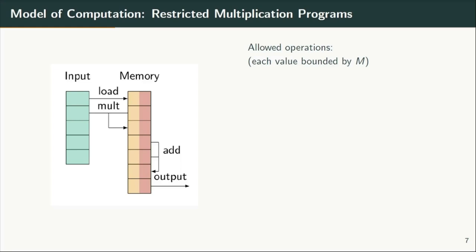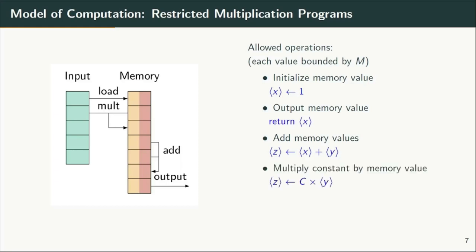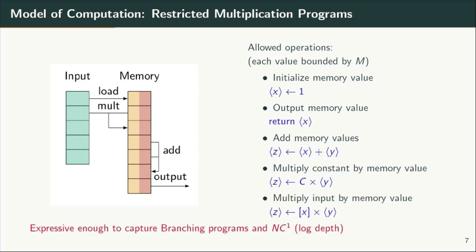RMS programs allow for initialization of a certain number of memory values, where each memory value is bounded above by a parameter m, and they allow for the following operations: we can initialize any memory value to a constant 1; we can output any memory value as part of the program output; we can add any two memory values into another memory value; we can multiply any memory value by a public constant; and finally we can do a restricted multiplication, which means multiplying any input x with a memory value y to store that as a memory value z. Due to the restricted multiplication, this model certainly does not capture general circuits, yet it is pretty expressive since it does capture branching programs and lookup circuits.